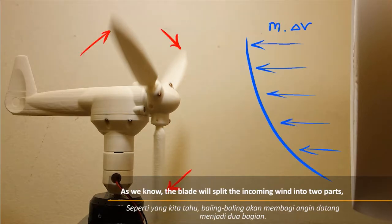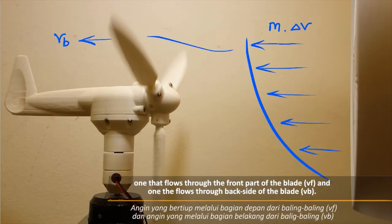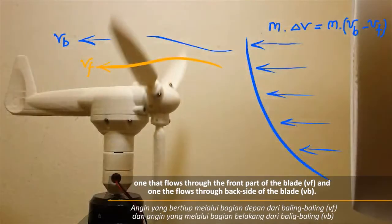As we know, the blade will split the incoming wind into two parts: one that flows to the front part of the blade, vf, and one that flows to the back side of the blade, vb.